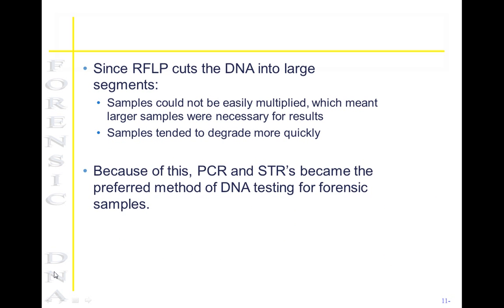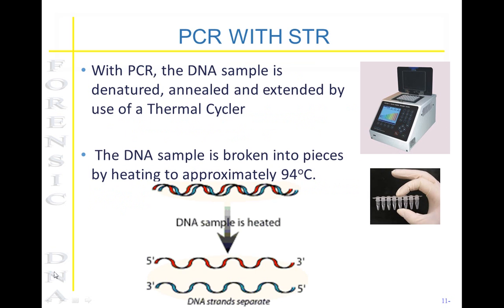Since RFLP cuts the DNA into larger segments, samples cannot be as easily multiplied, which meant that the samples had to be larger to obtain results. Because of the larger sample size, they also tended to degrade more quickly. Because of this, PCR and STRs have become the preferred method for DNA testing in forensic laboratories.